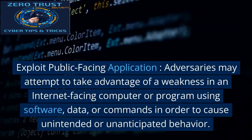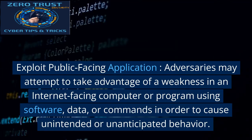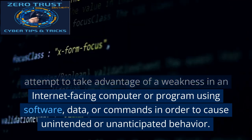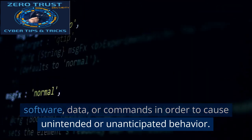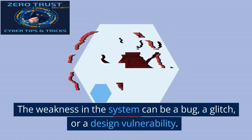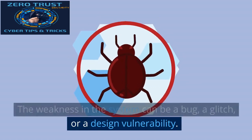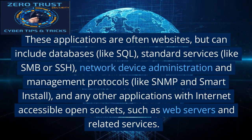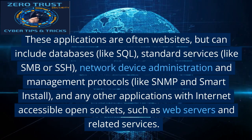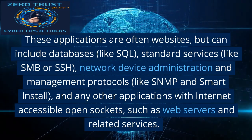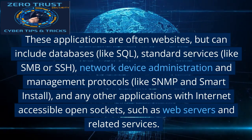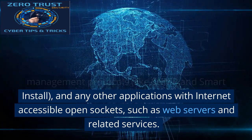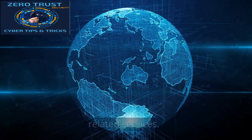Exploit Public-facing Application: Adversaries may attempt to take advantage of a weakness in an internet-facing computer or program using software, data, or commands in order to cause unintended or unanticipated behavior. The weakness in the system can be a bug, a glitch, or a design vulnerability. These applications are often websites, but can include databases like SQL, standard services like SMB or SSH, network device administration and management protocols like SNMP and Smart Install, and any other applications with internet-accessible open sockets, such as web servers and related services.